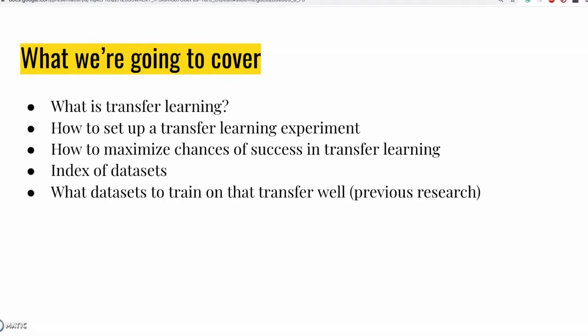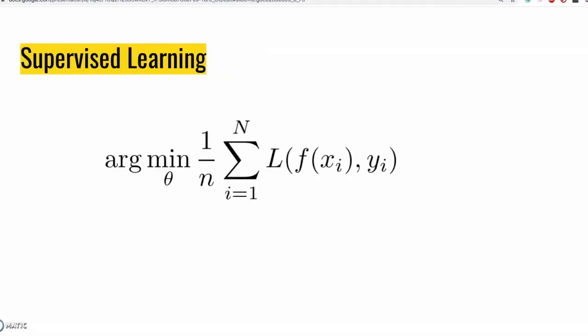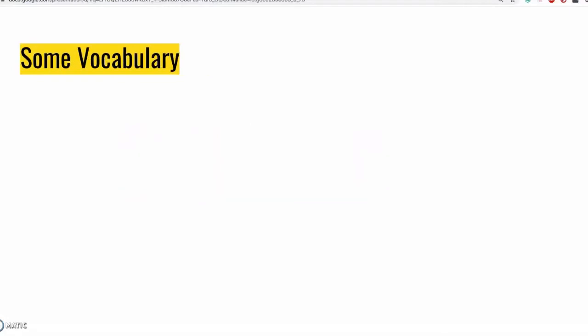So let's get started. First, let's go over what exactly transfer learning is. To do that, let's go back to the basic supervised learning regime, which consists of a model with weights, data, and a dataset with examples X_i and labels Y_i. In the supervised regime, we want to find the weights that minimize the loss function of the task that the dataset belongs to. Now, in order to introduce transfer learning, we need to start and set up some vocabulary.